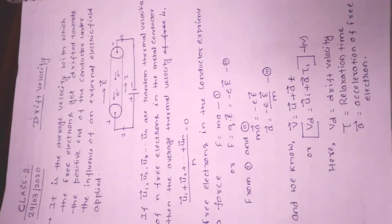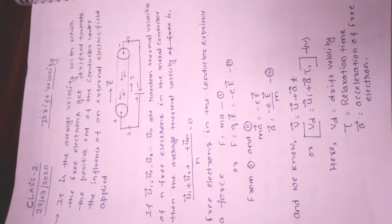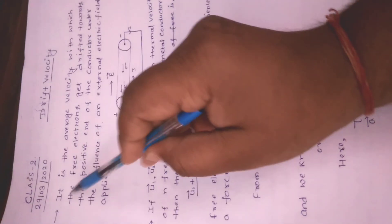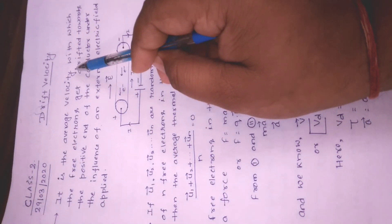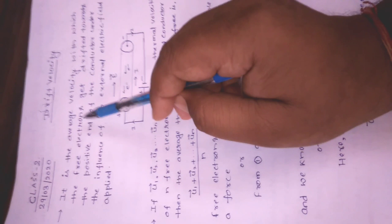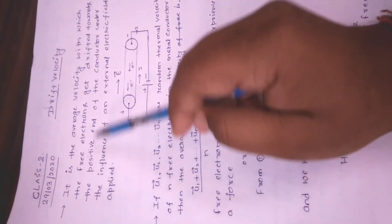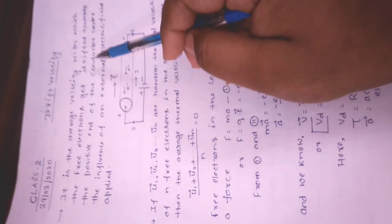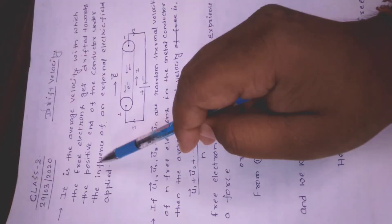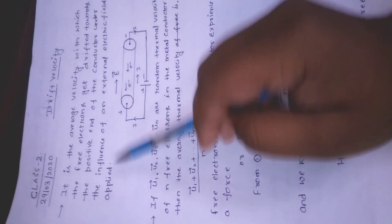Welcome everyone. Today's topic is drift velocity. Drift velocity is the average velocity with which the free electrons get drifted towards the positive end of the conductor under the influence of an external electric field applied.